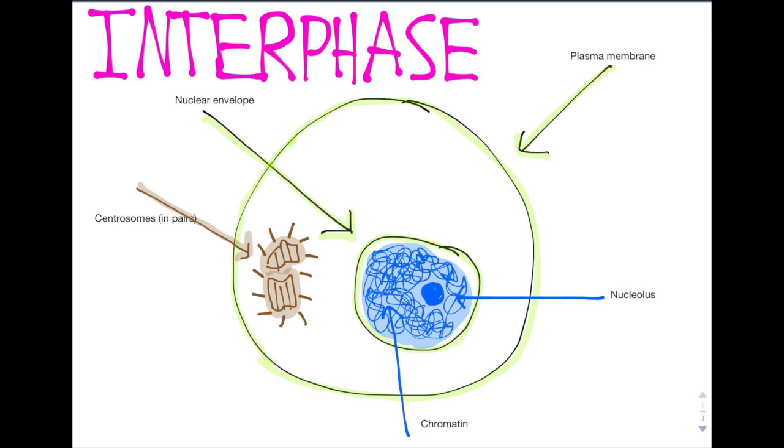Centrosomes are two centrioles paired together at a right angle. Interphase accounts for 90% of mitosis.